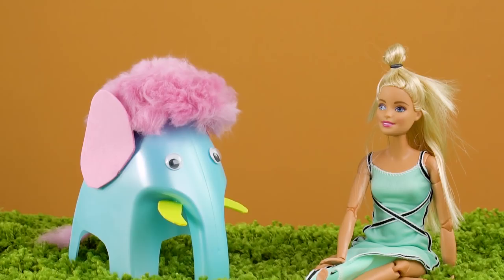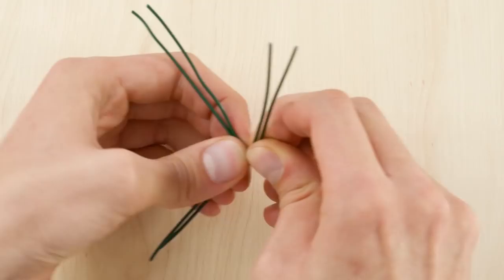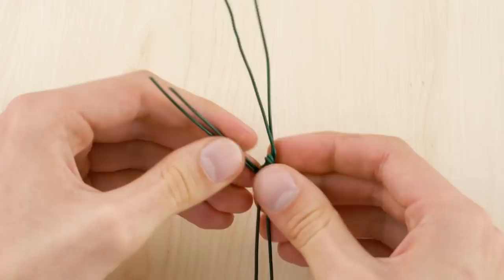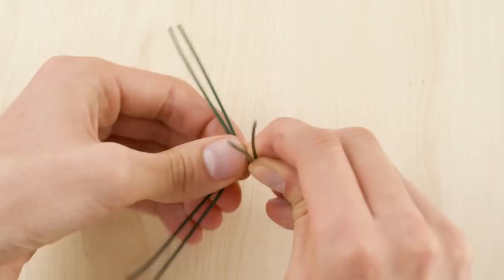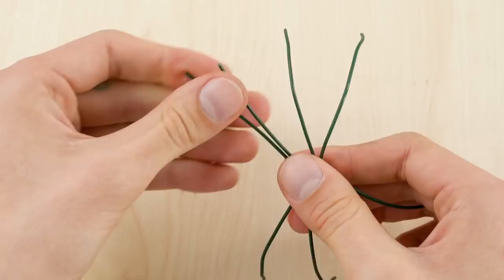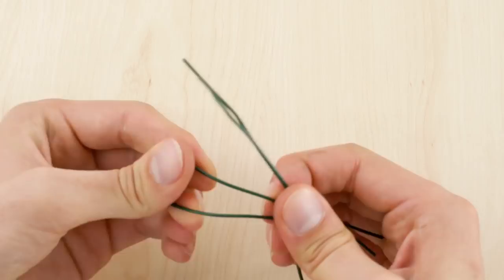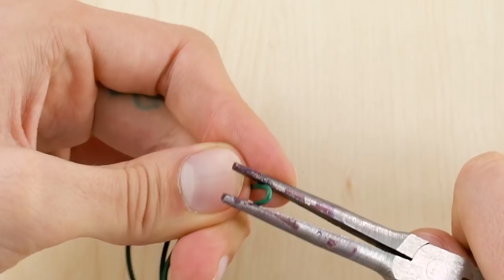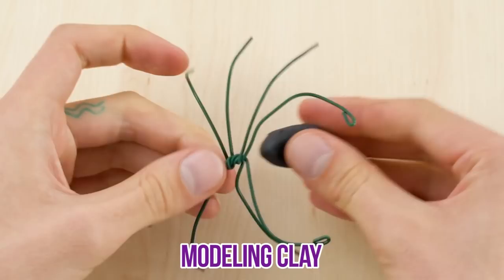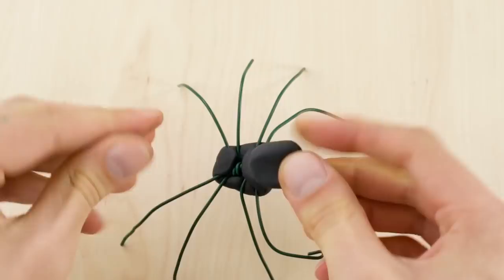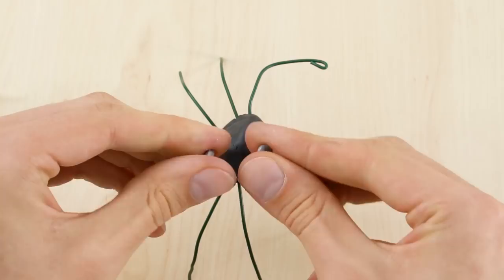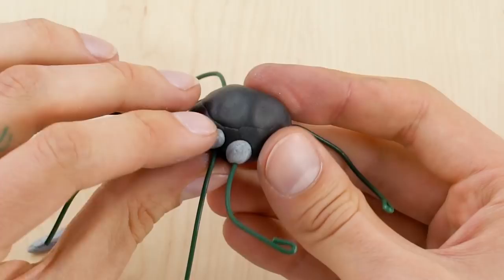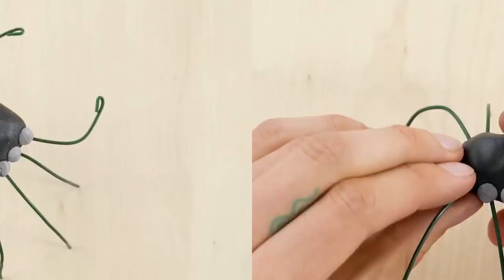Spider. A spider isn't your ordinary pet, but then again Barbie isn't your ordinary girl. Cut four pieces of wire for spider legs. Then twist them together to make eight legs. Bend the wires down so they look like spider legs. Twist the front legs to make little feet. Now make the body out of black modeling clay. Just press it onto the center of the wire legs. Add some gray circles at the base of the legs. Let's give this little guy a smile.